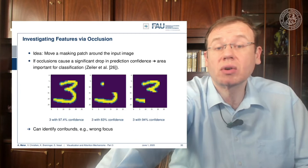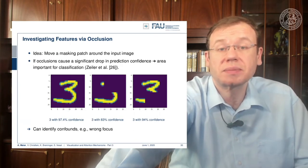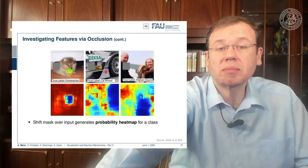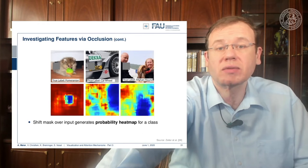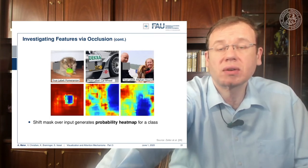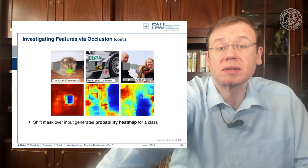We can try to identify confounds or wrong focus with these kinds of techniques. Here you see the Pomeranian image on the top left, and the important part of the image is really located in the center — if you start occluding the center, the confidence for the class Pomeranian goes down. In the middle column you see the true label 'car wheel' and the corresponding image, and here you can see that if you hide the car wheel the confidence drops.